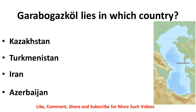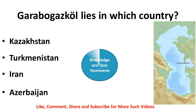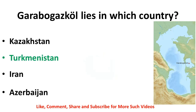The Karbogaz lagoon lies in which country — Kazakhstan, Turkmenistan, Iran, or Azerbaijan? Since we just studied the map, this should be easy. The correct answer is Turkmenistan, because to the east the Caspian Sea is surrounded by Turkmenistan, and the lagoon of Karbogaz lies in Turkmenistan.